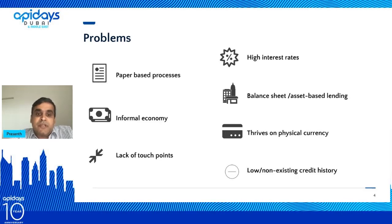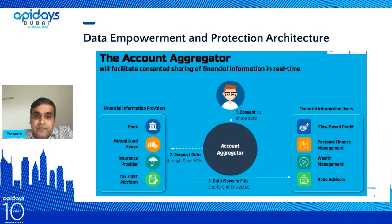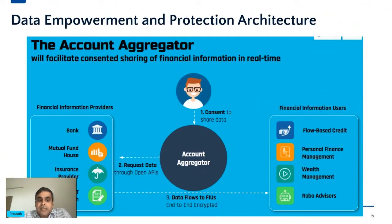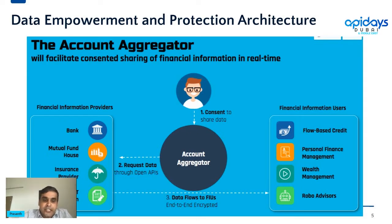The common factor needed to address all these problems is data — how to make data available for everybody. For example, I have 20 years of banking history with Bank A, but I'm going to Bank B for a mortgage because they offer a better rate. Bank B requires a plethora of hard-copy signed documents.